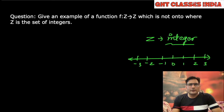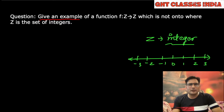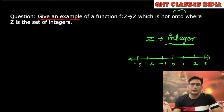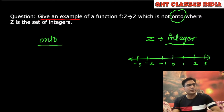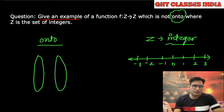Now, give an example of a function which is not onto, where Z is the set of integers. Give an example of a function Z to Z. So we need to give an example of a function which is not onto. So first of all we need to understand this word 'onto'. This is a type of function. Let me explain the onto function to you first.